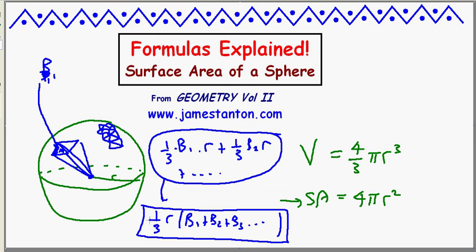So Archimedes argued that if you did finer and finer approximations, this formula really wants to become the true volume of the sphere, which we know is 4 thirds pi r cubed. This is what Archimedes argued.